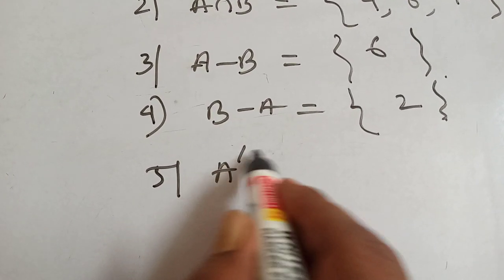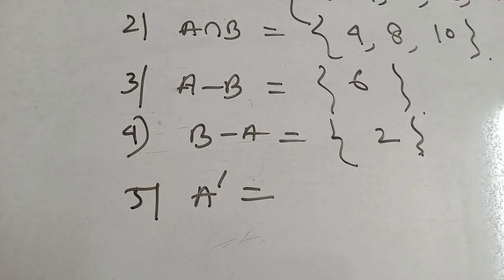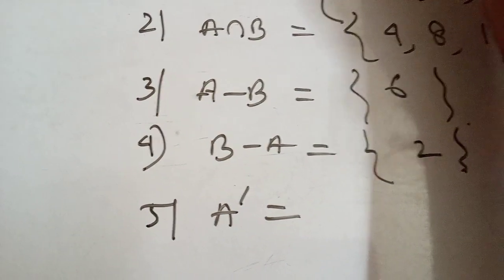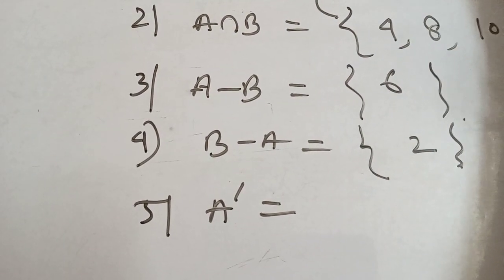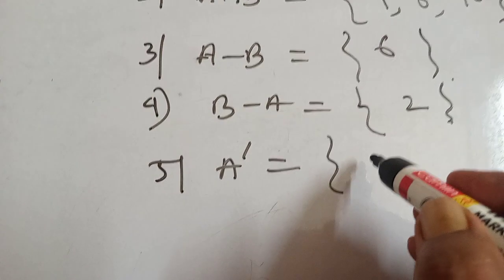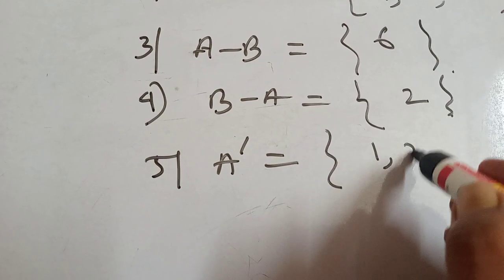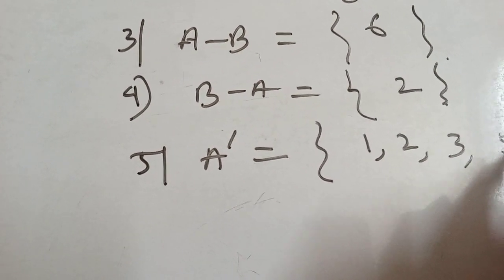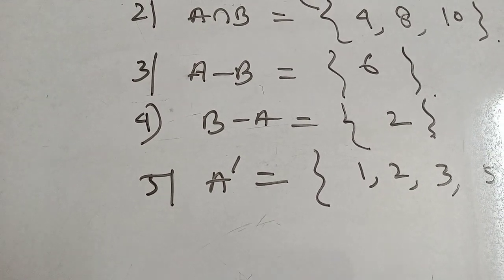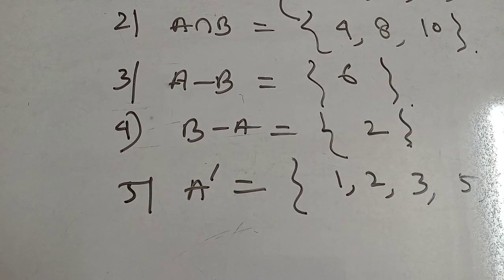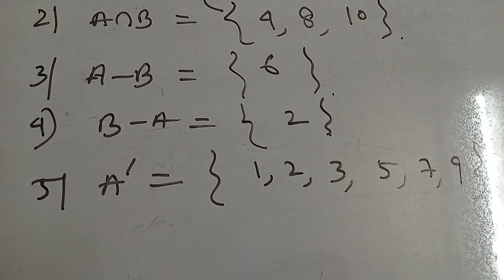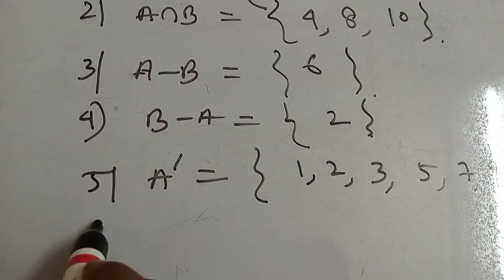Fifth, A transpose means contained in universal set but not in A. A = {4, 6, 8, 10}, so removing these from U = {1,2,3,4,5,6,7,8,9,10} gives A transpose = {1, 2, 3, 5, 7, 9}.